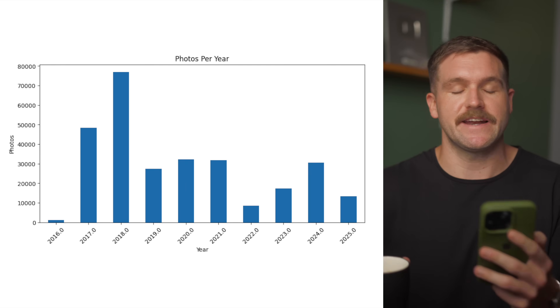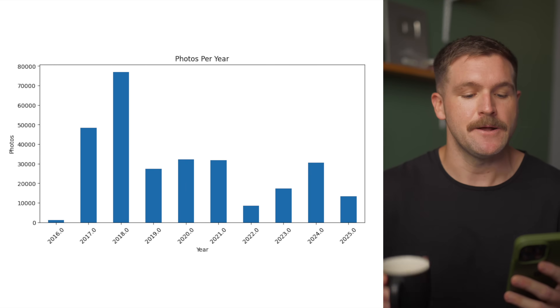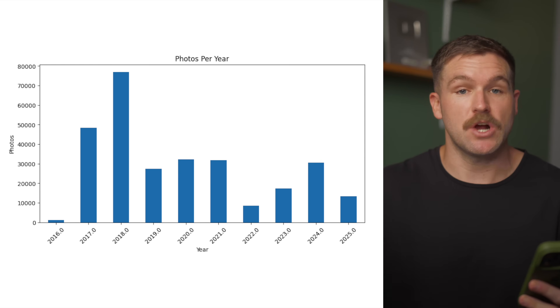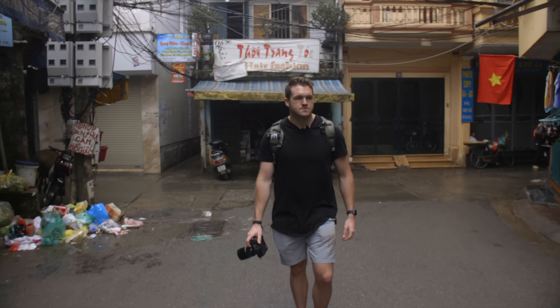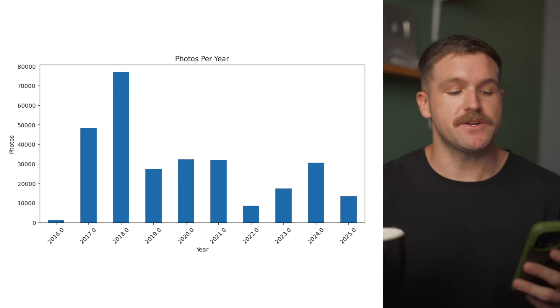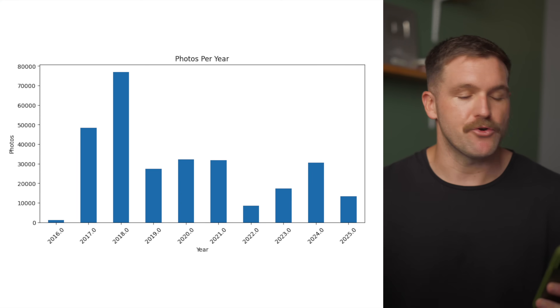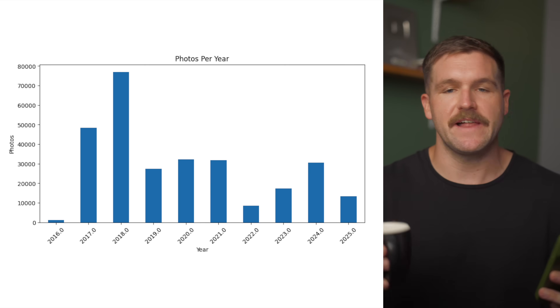Breaking down the photos per year, I shot a ton of photos between 2017 and 2018, with the number dropping off a little bit in recent years. I was absolutely obsessed with photography back then — shooting every day, skipping work, going out on lunch breaks. I think that period of obsession is one of the reasons I am the photographer I am today. It dropped off especially in 2022, which was a tough year for me creatively and emotionally, but the photos I'm taking now are higher quality and I'm more thoughtful when I'm out shooting.